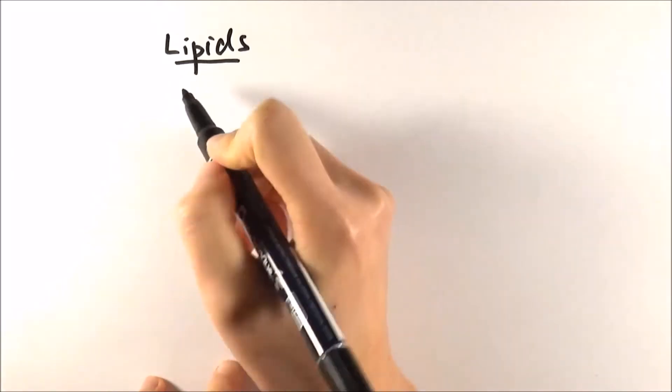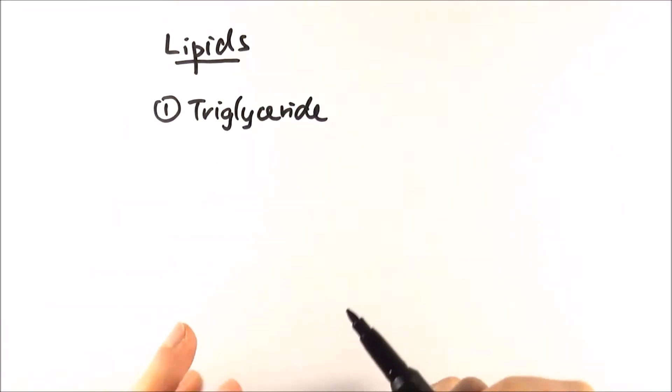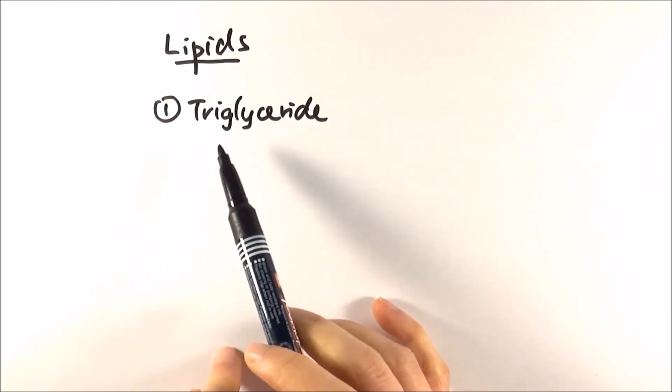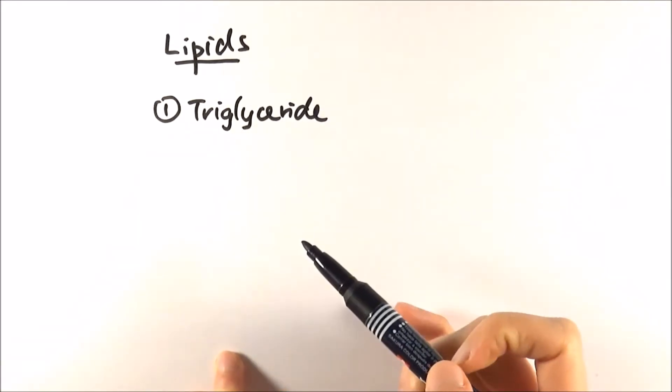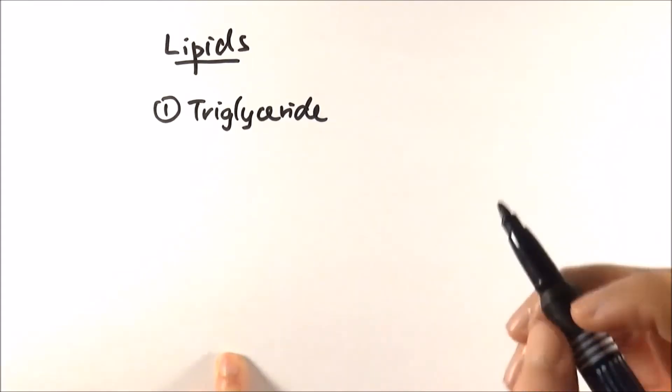There are different types of lipids and specific examples that you need to know. The first one we'll think about is triglycerides. Now triglyceride, as the name implies, contains three of something, and what it actually contains is one glycerol molecule and three fatty acid chains.